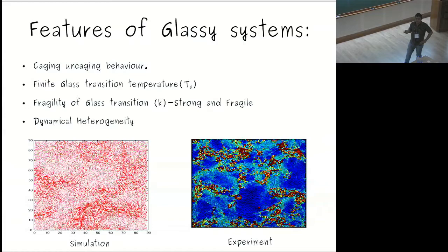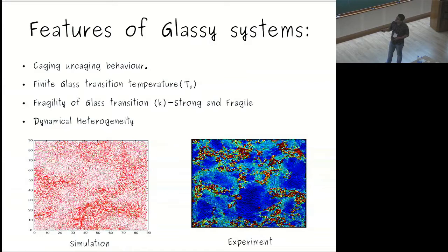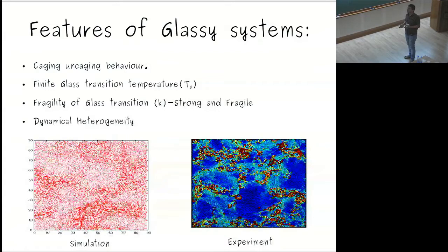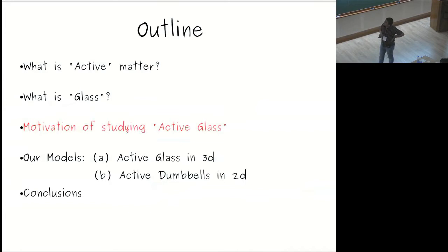The system also shows dynamical heterogeneity. If you look at a liquid at high temperature, the dynamics everywhere in the system is almost similar — it is homogeneous. But close to the glass transition, some part of the system is dynamically very different from other parts. This is shown in a simulation plot where displacement vectors are big in some regions and small in others, and in an experiment where particles are colored by speed — blue is slower, red is faster — showing spatial heterogeneity in mobility.